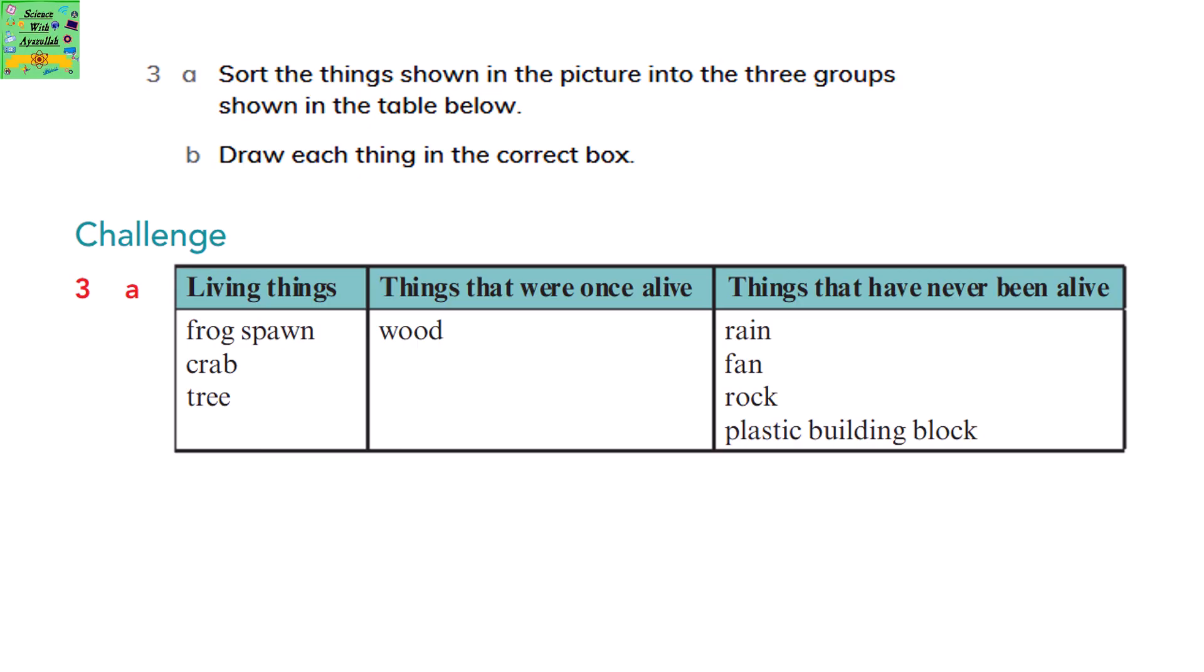Frog spawn, crab and tree come under living things. Wood is a thing that was once alive. Things that have never been alive are rain, fan, rock and plastic building block.